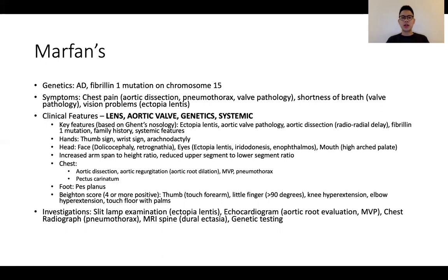Third, genetics, either in the form of an established fibrillin-1 mutation or family history. And finally, a group of systemic manifestations. In the PACES exam, the possible approaches would include chest pain in a patient presenting with either aortic dissection or pneumothorax, shortness of breath in a patient who develops heart failure from valve pathologies, or visual problems in view of ectopia lentis.